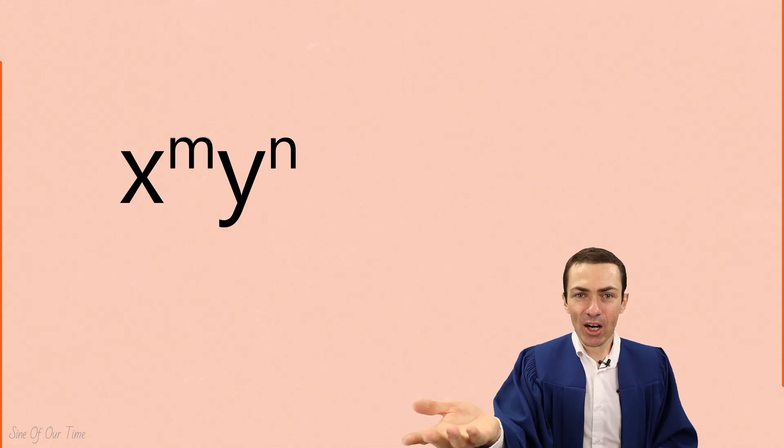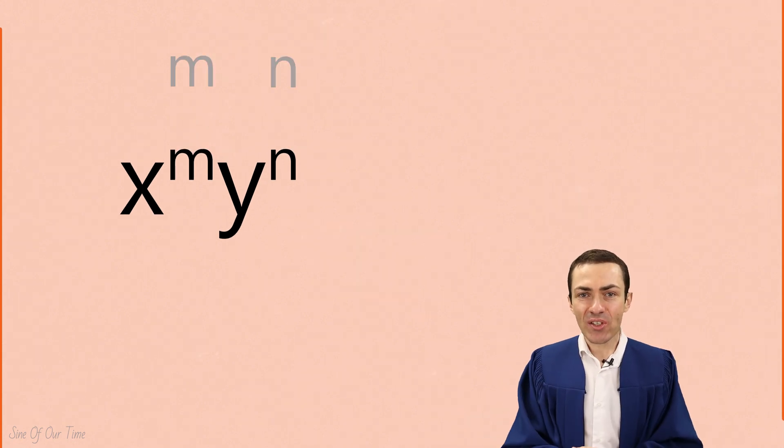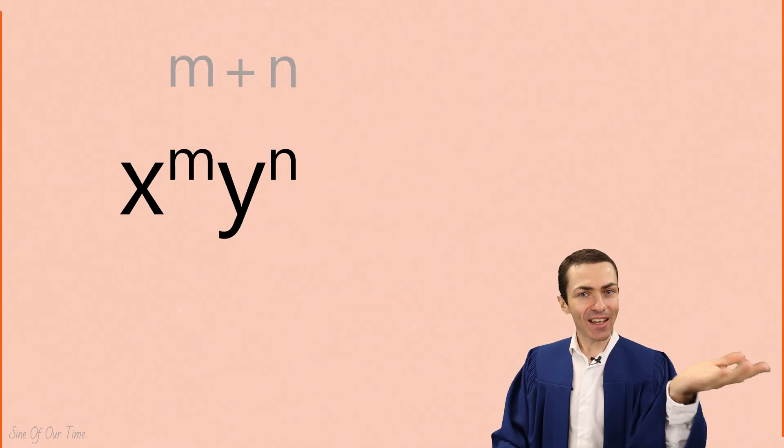Simply put, the degree of a term is just the sum of the exponents of the variables in that term. For example, if we have x to the power of m, y to the power of n, the degree of that term would simply be m plus n.